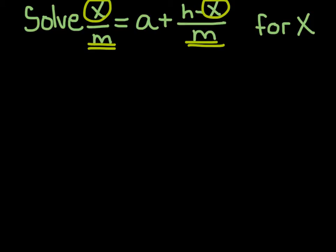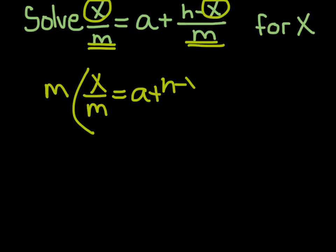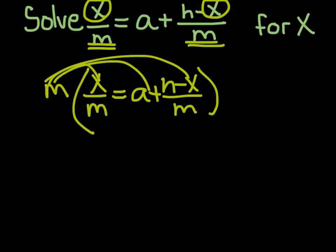So to get rid of a fraction, you multiply everything by the denominator. As long as you multiply everything in the equation by that denominator. So I'm just going to put it out in parentheses, x over m equals a plus h minus x all over m. You distribute it to this and this and this, then it's still equal.